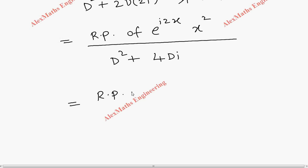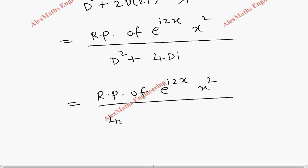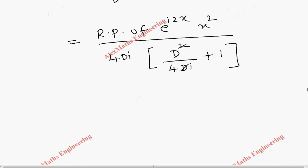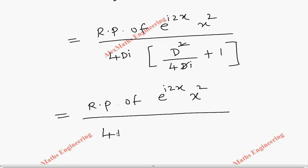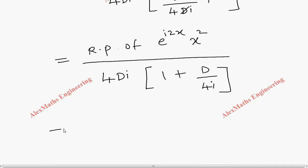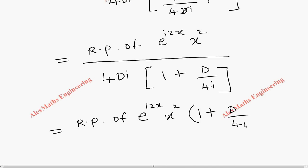We factor 4Di from the denominator, giving the real part of e^(i2x)·x² / (4Di·(1 + D/4i)). Moving (1 + D/4i) to the numerator, we get the real part of e^(i2x)·x²·(1 + D/4i)^(-1) / (4Di).